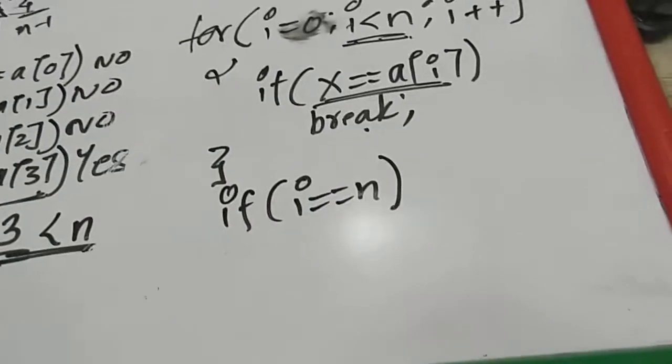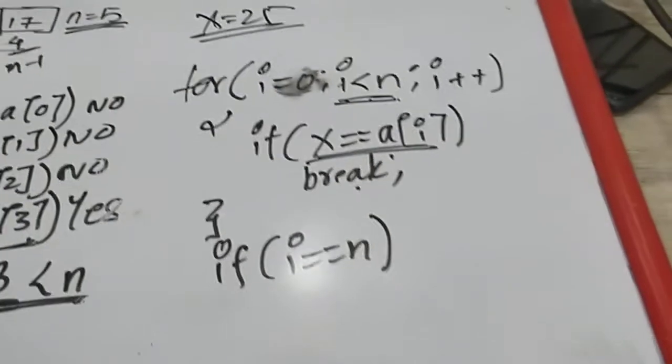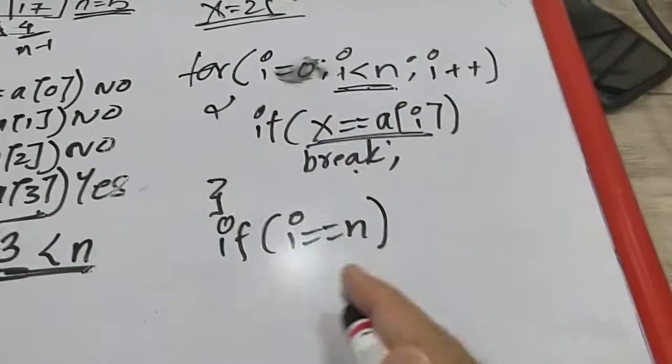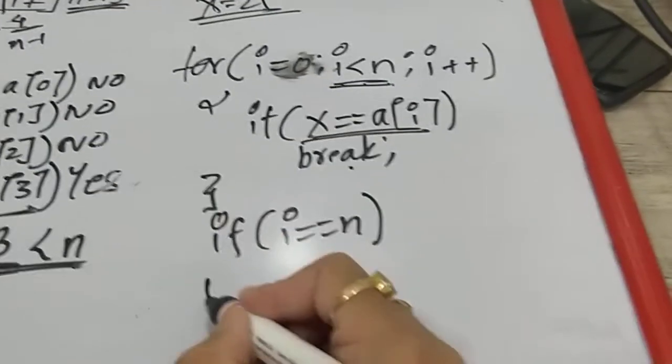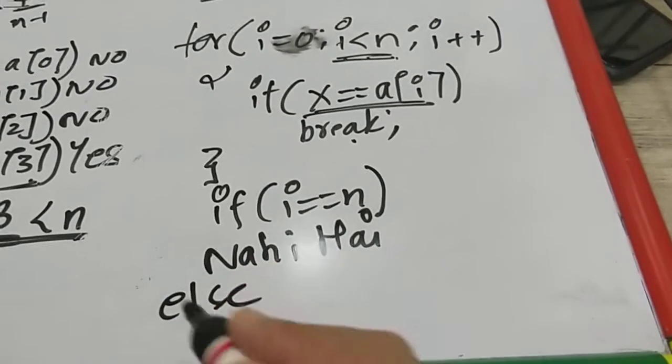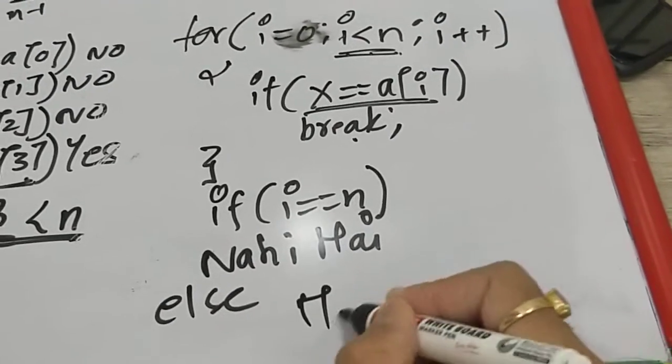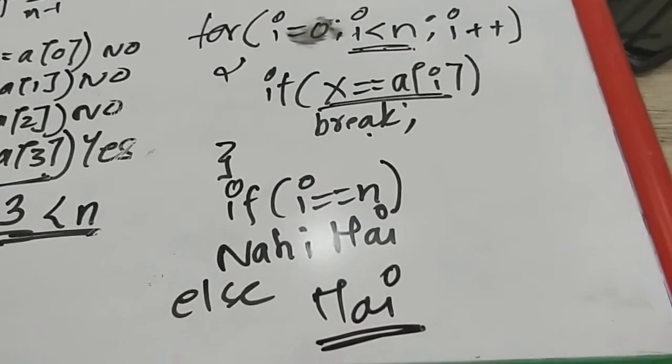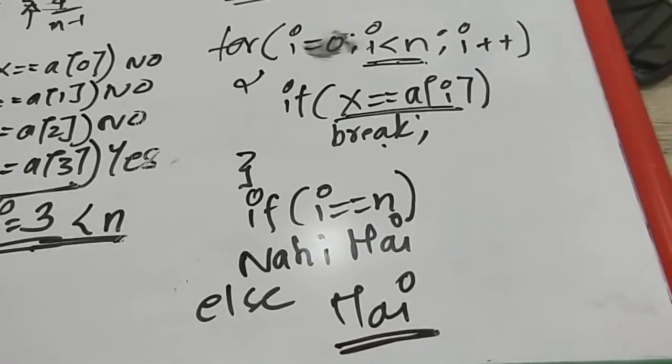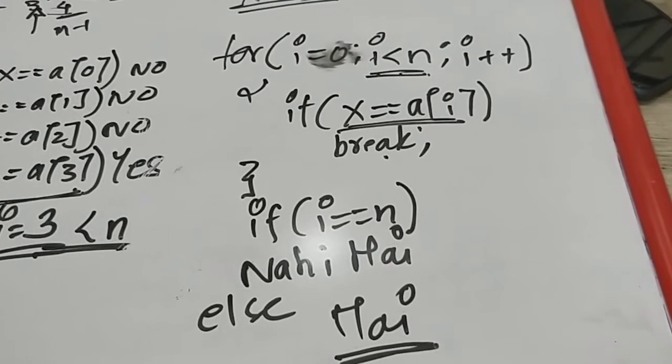If i becomes equal to n, it means that from position 0 to n minus 1 my element is not present. So after this for loop, if i eventually becomes equal to n, we will say the element is not present in the array. But if i is not equal to n, we will say the element is present in the array. So this is the logic for searching an element in an array using linear search.